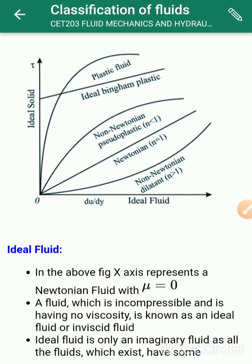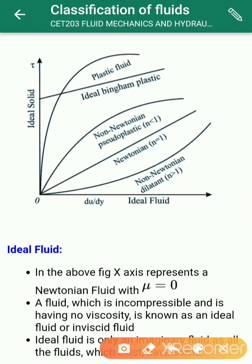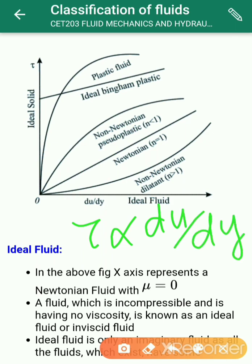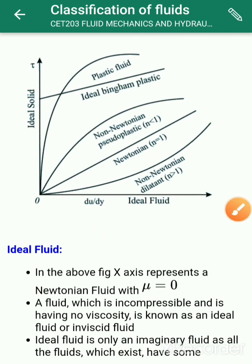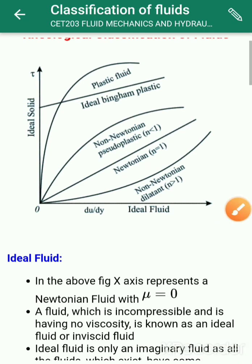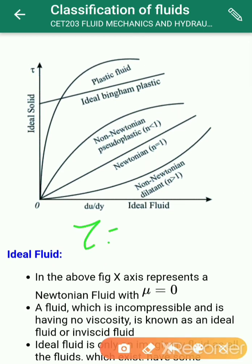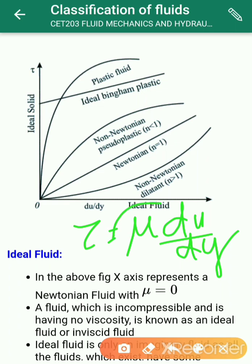What is Newton's law of viscosity? According to Newton's law of viscosity, shear stress is proportional to velocity gradient. The proportionality constant gives us tau equals mu times du by dy. So the proportionality constant is mu.